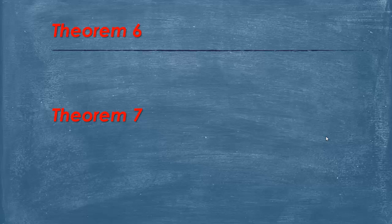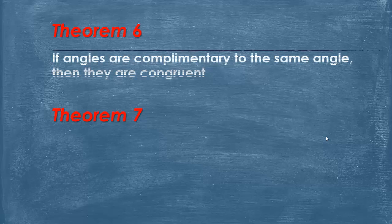Now theorem 6 and theorem 7 are basically identical to theorem 4 and theorem 5, respectively, except now we're talking about complementary angles. So remember, supplementary, 180 degrees. Complementary, 90 degrees.